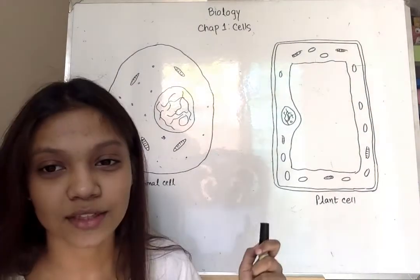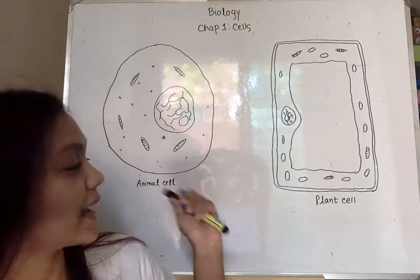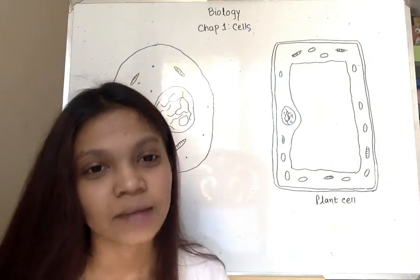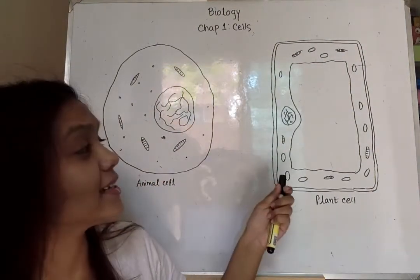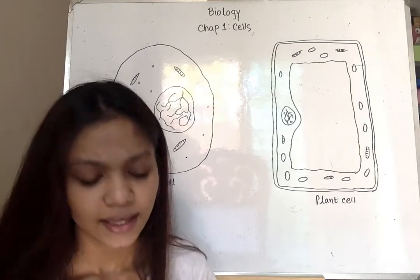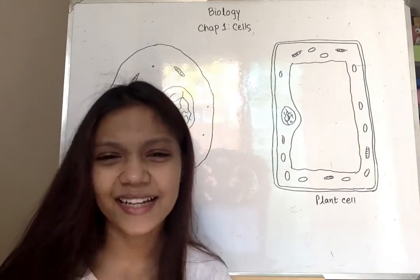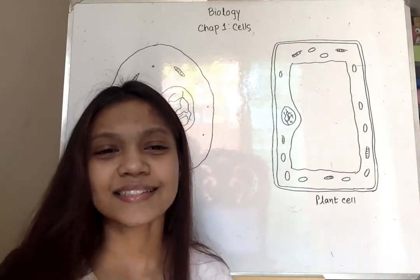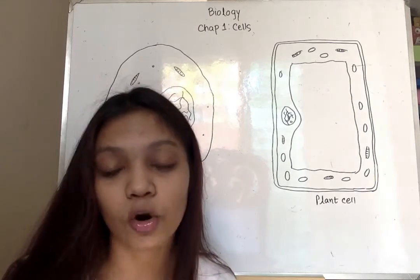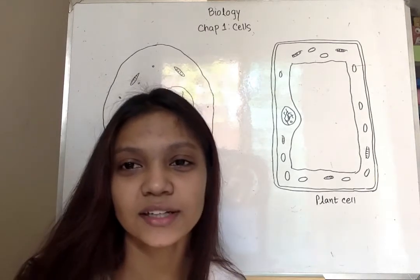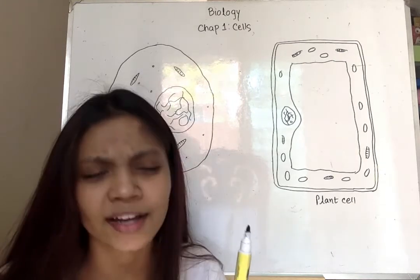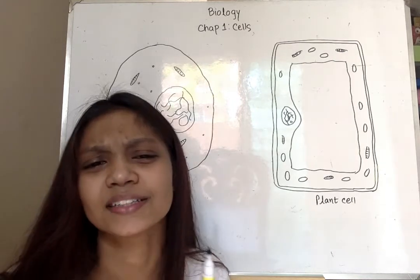Here I have drawn two cells: a generalized animal cell and a plant cell. Now these cells contain a mass called protoplasm. It is a complex jelly-like substance and 70 to 90 percent of it contains water. The rest of it contains minerals, salts, and organic compounds such as carbohydrates, fats, and proteins.